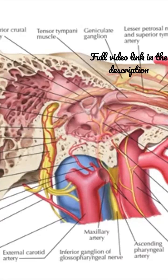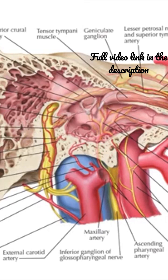Along with the ear ossicle, you have two muscles — the tensor tympani muscle and the stapedius muscle — and then you have the blood vessels and nerves in the tympanic cavity.